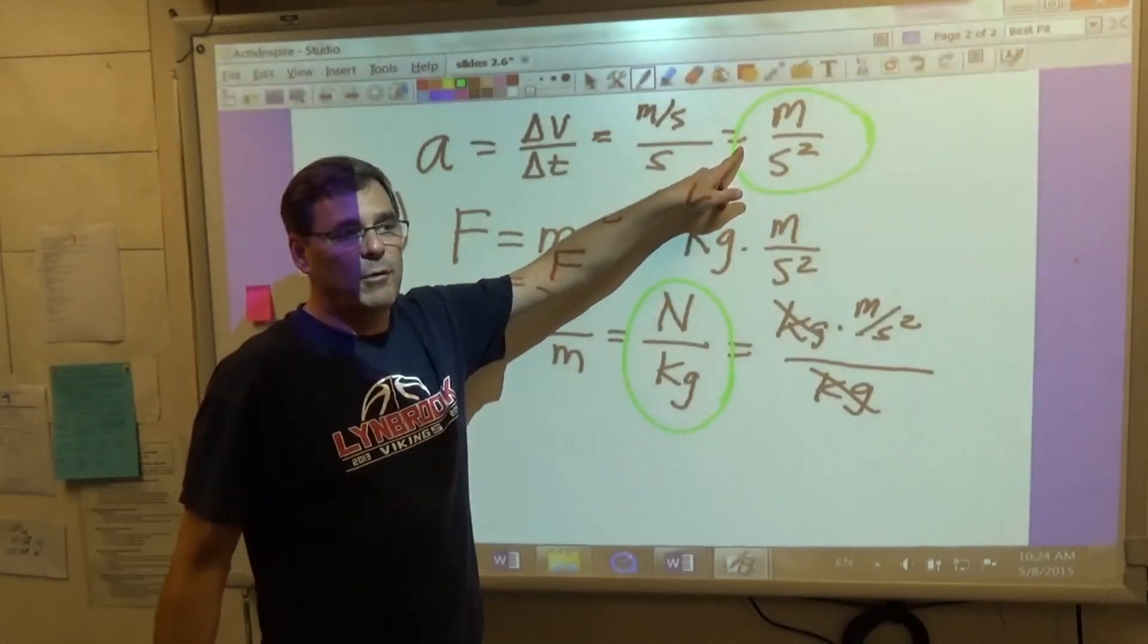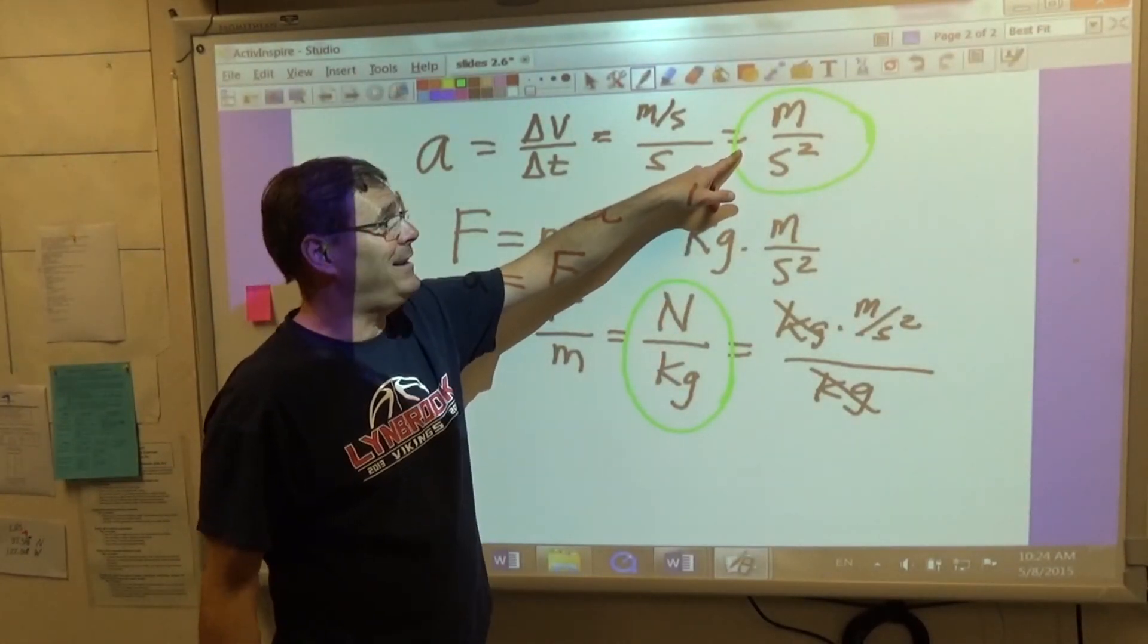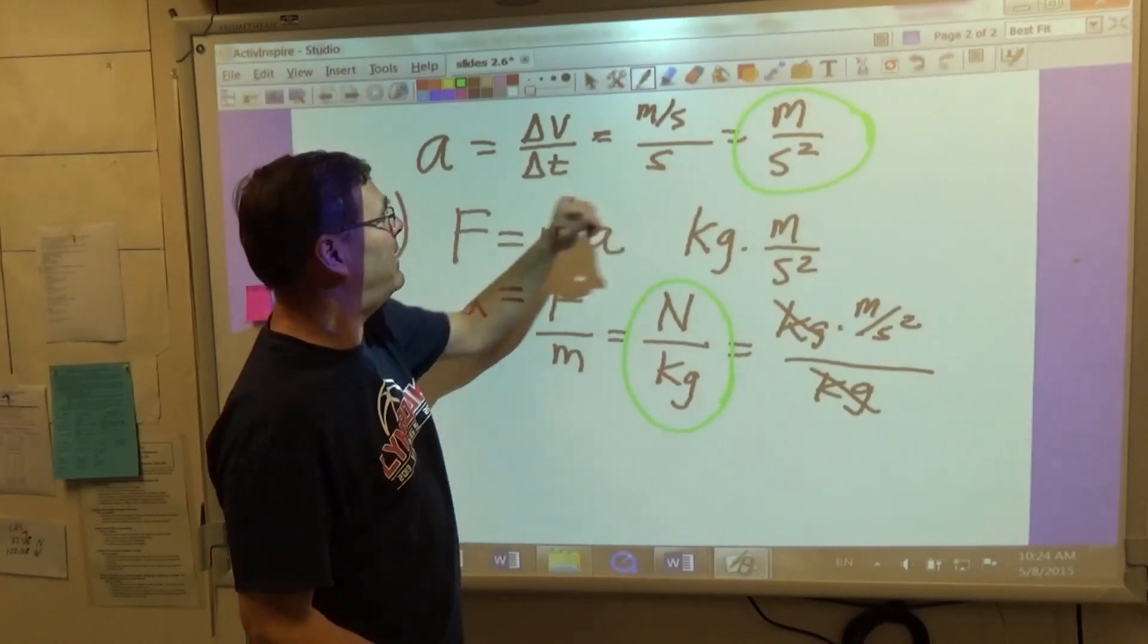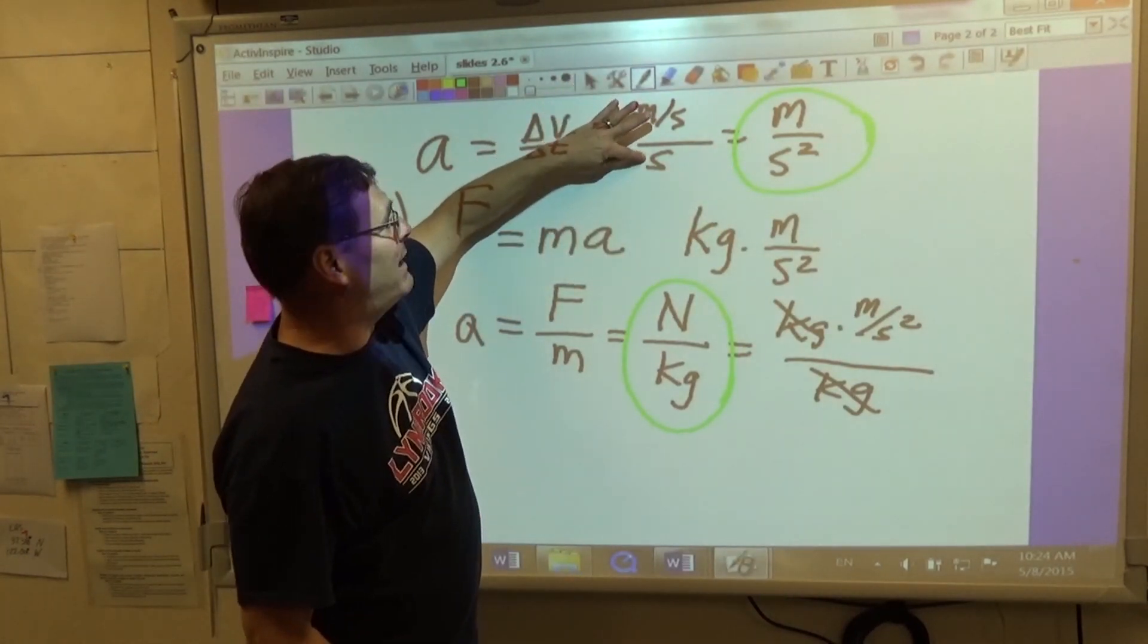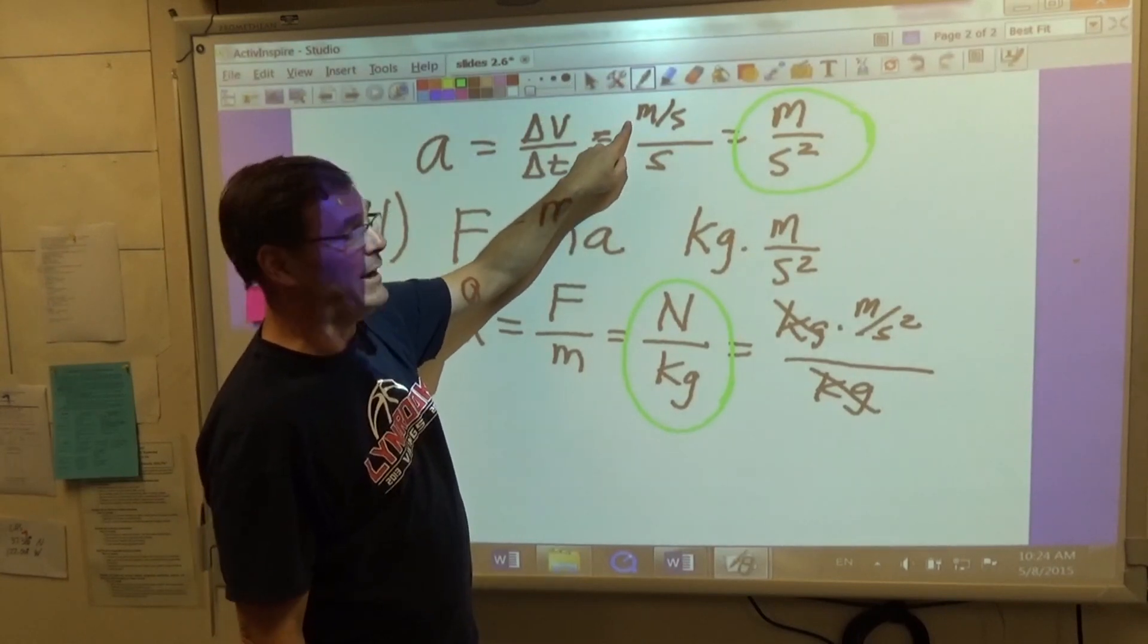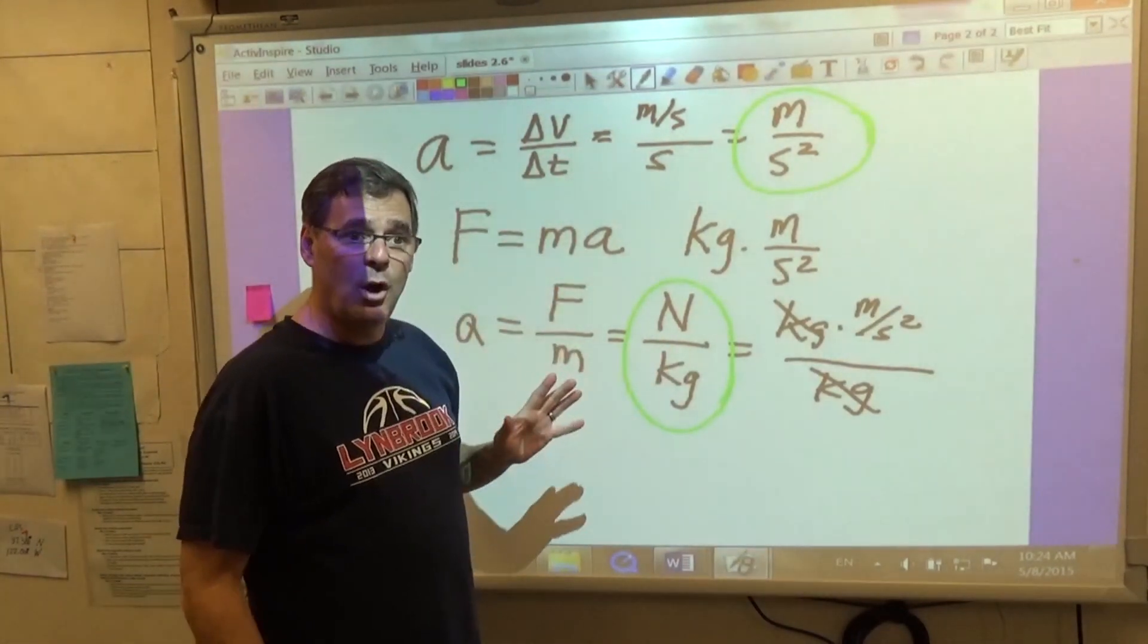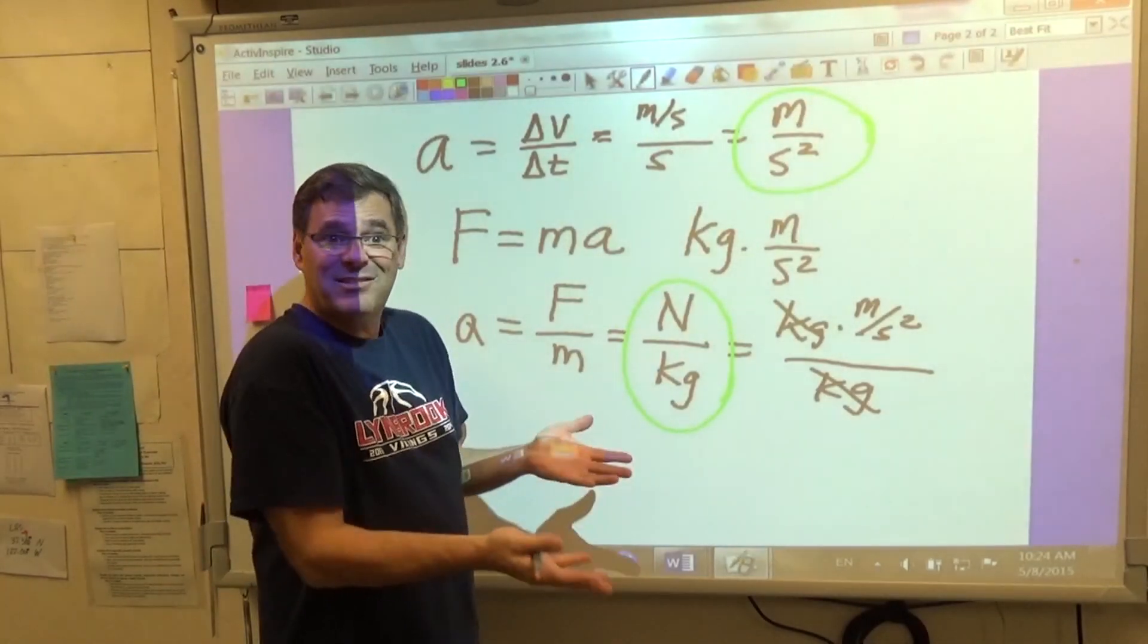Meters per second squared or newtons per kilogram. So this is more convenient when we're talking about acceleration due to gravity. Something accelerates at 9.8 meters per second squared. For every second that goes by, the velocity changes by 9.8 meters per second. But this one can also be useful when we talk about an object sitting on a table.